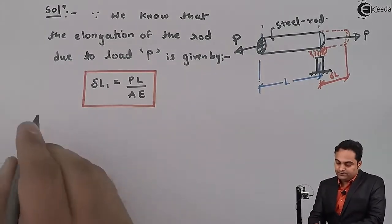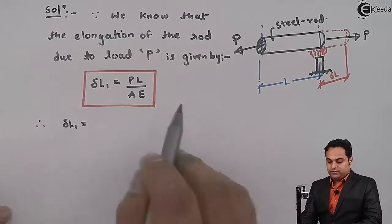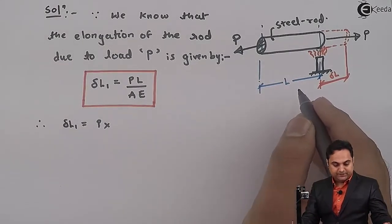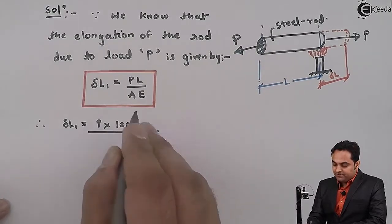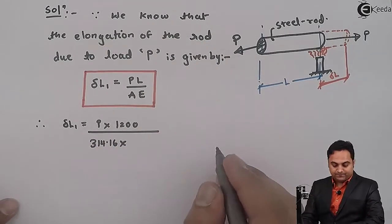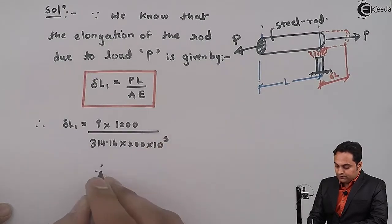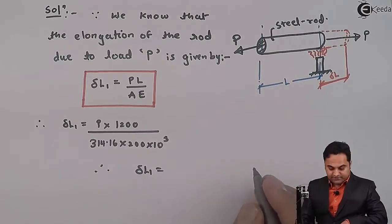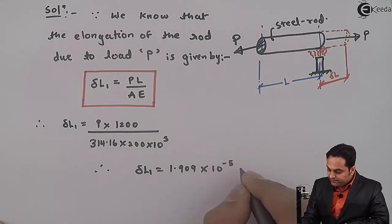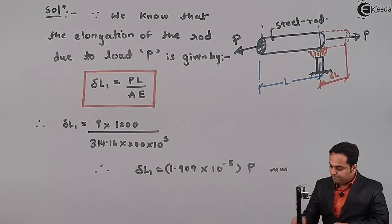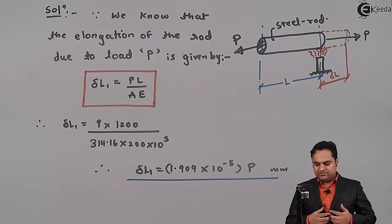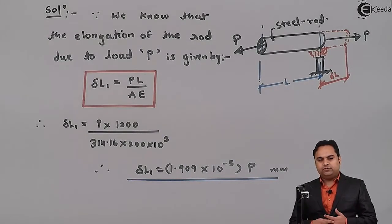So here I will go on putting the values delta L1. P is the value which we have to calculate, so this is unknown. Length is given 1.2 meter, so that is 1200 mm divided by area we have found out in the solution, 314.16 into Young's modulus, 200 into 10 raised to 3. So from this I will get delta L1 in the form of P. And my answer is 1.909 into 10 raised to minus 5 P and this will be in terms of mm. So I have got the first elongation because of load P which is a pull type of load. And because of that the length of the steel rod will increase.